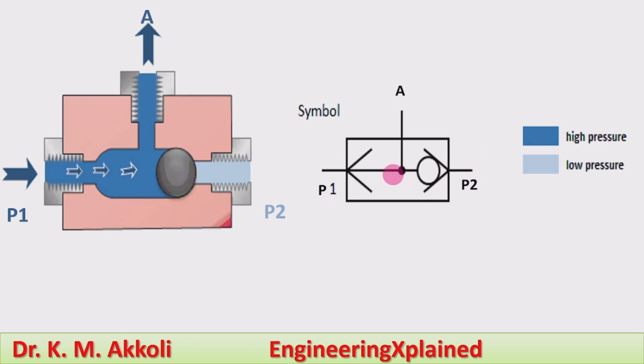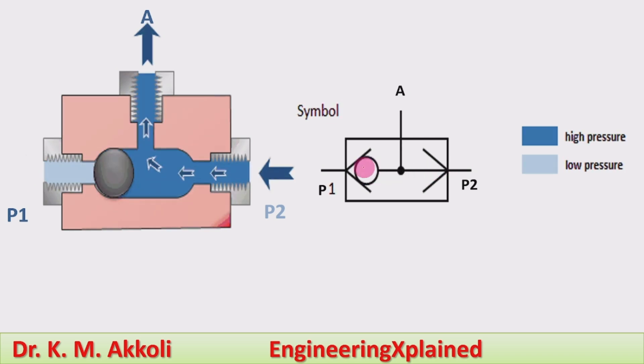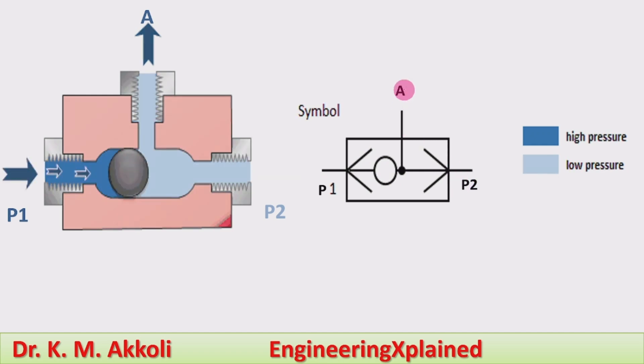If the P2 pressure is higher, then the shuttle moves towards the left, and the P2 source flow will be connecting to the actuator.